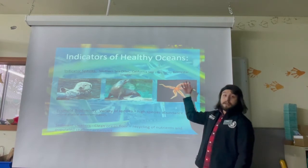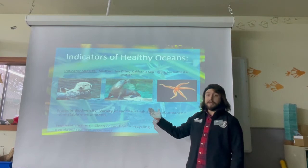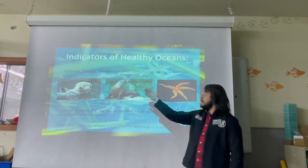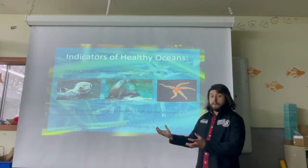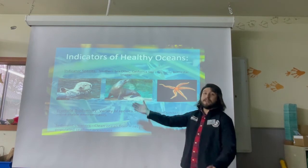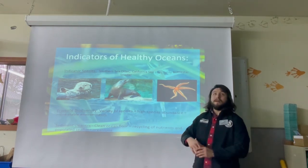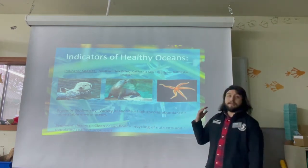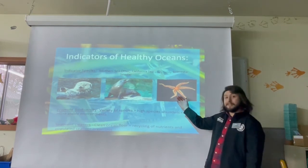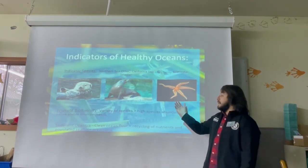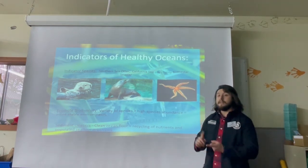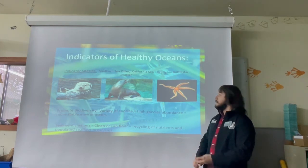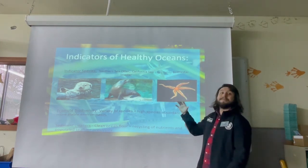Moving on to indicators of a healthy ocean as it relates to salmon. Indicator species for the ocean include the southern sea otter and the California sea lion. The southern sea otter promotes kelp forest growth by eating sea urchins. The California sea lion acts as a main food source for orcas, which helps channel the food web and benefits salmon. Together these promote biodiversity. Finally, the spiny brittle star sea star keeps the sea floor clean, recycles nutrients, and promotes more populated sea floor organisms — making the ocean very diverse.